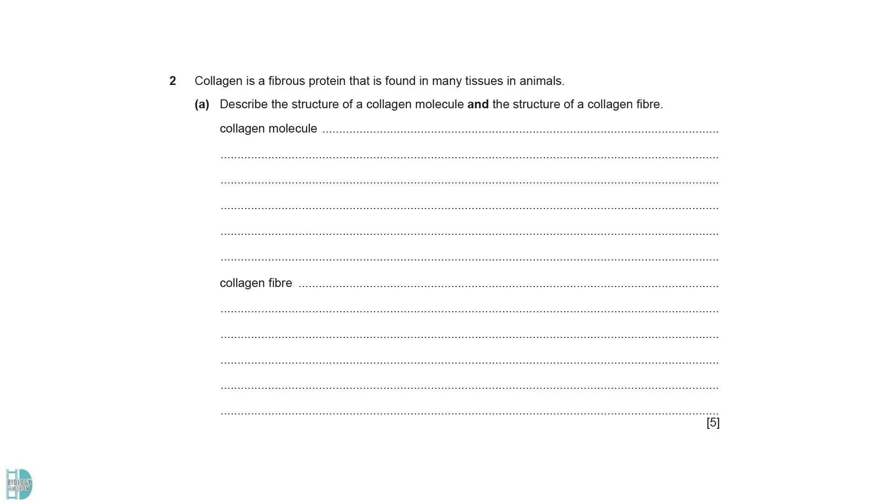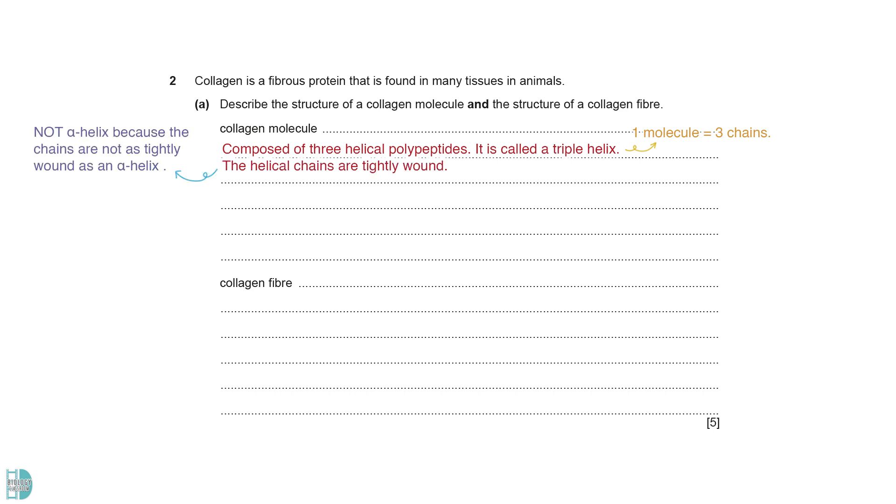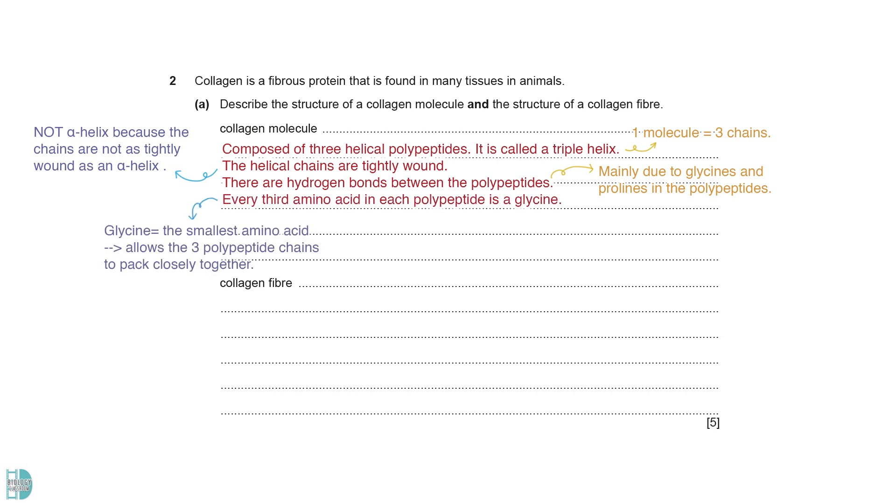Describe the structure of a collagen molecule and the structure of a collagen fiber. Three helical polypeptides form a collagen molecule. It is called a triple helix. The helical chains are tightly wound, but we don't call it an alpha helix because the chain is not as tightly wound as an alpha helix. Hydrogen bonds hold the chains together. It is mainly due to the presence of many glycines and prolines in the polypeptides. In each polypeptide, every third amino acid is glycine. Glycine is the smallest amino acid. It allows the three polypeptide chains to pack closely together.